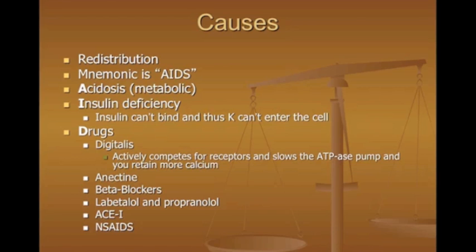'D' is for drugs. Classically, ACE inhibitors and NSAIDs cause elevated potassium. Beta-blockers can cause it, as can digitalis — dig competes with receptors, slows the sodium-ATP pump, and when you retain more calcium, potassium can't enter the cell. Succinylcholine in the field can raise potassium by about one millimole, so it's contraindicated in hyperkalemic patients. 'S' rounds out the mnemonic.